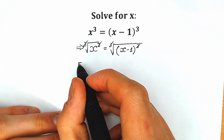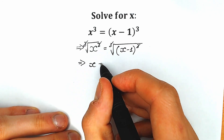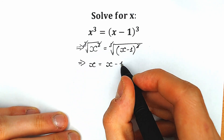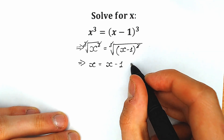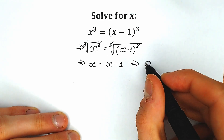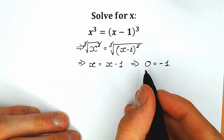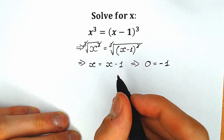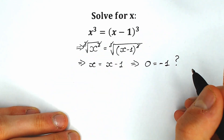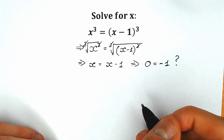Of course we can easily cancel these. And as a result, as you can see, we have x on the left side equal to x minus 1. From here a lot of students say: let's subtract x from both sides, and we have 0 equal to minus 1. And a lot of students at this point are confused, arguing with each other — how is it possible? How can we find our roots?